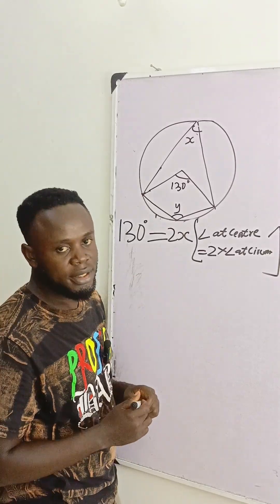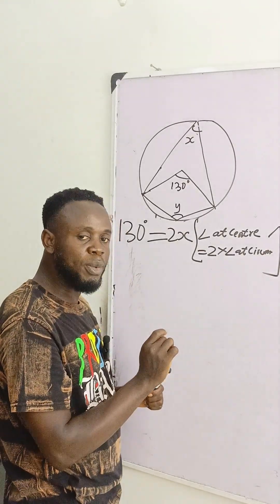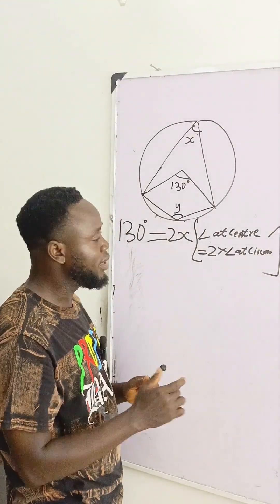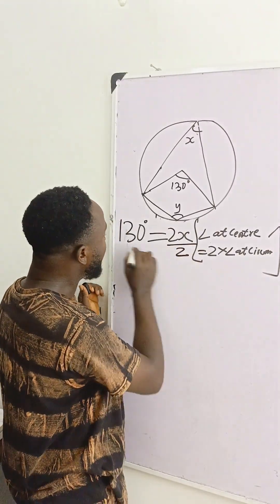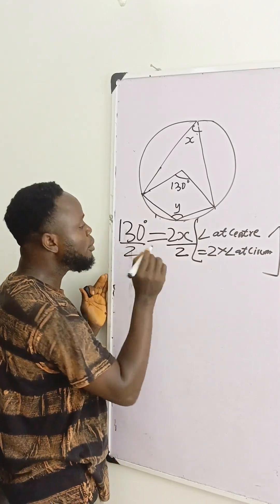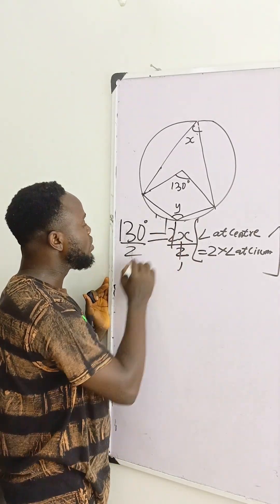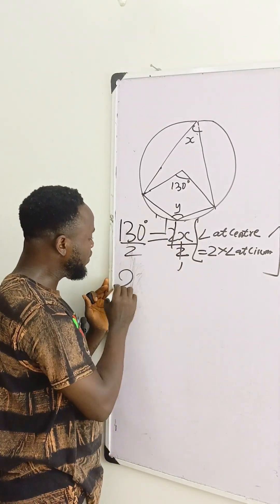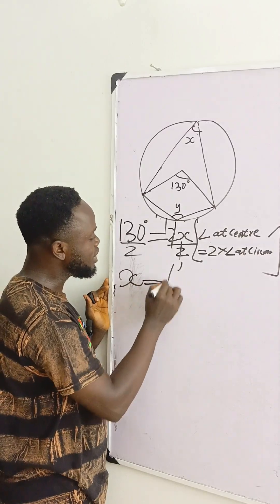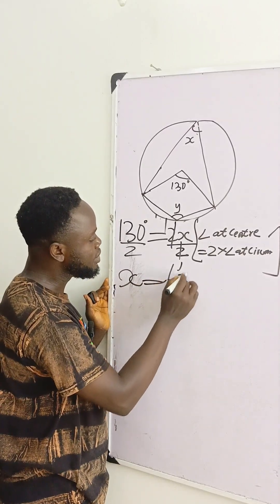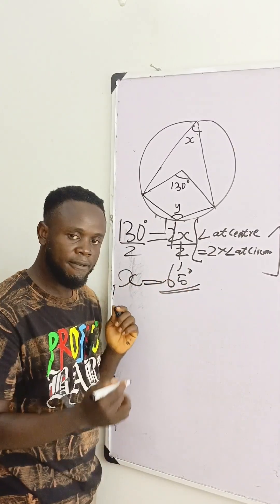That's why we write it this way. In circle geometry, you always write a reason alongside your working. So to find the value of x, we divide both sides by 2. When we do that, 130 divided by 2 gives us 65 degrees as the value of x.